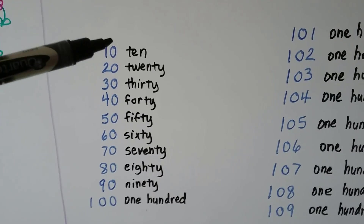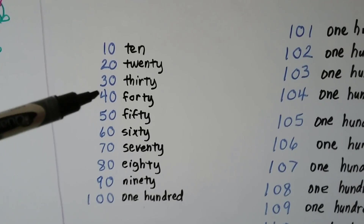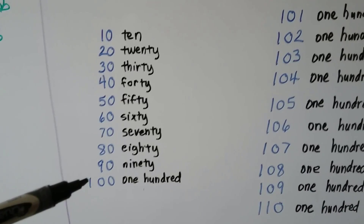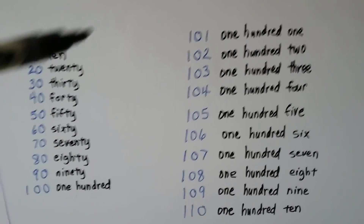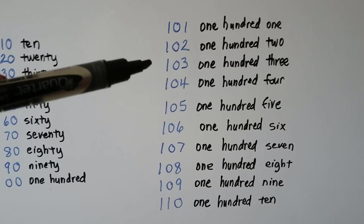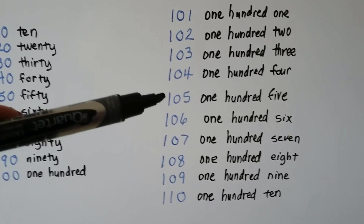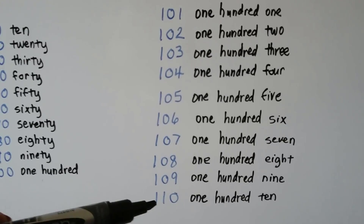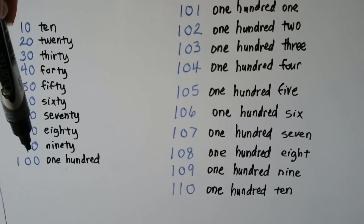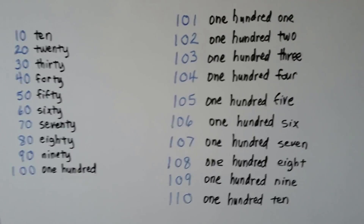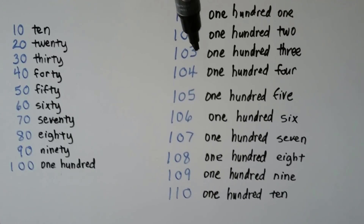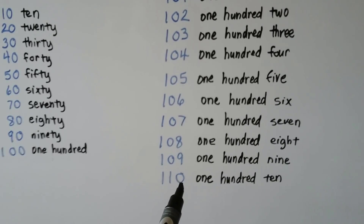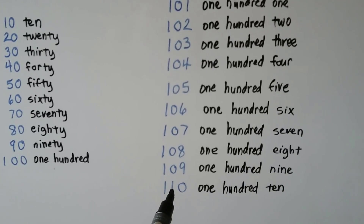We can count by tens: ten, twenty, thirty, forty, fifty, sixty, seventy, eighty, ninety, one hundred. And we can count on from one hundred: one hundred one, one hundred two, one hundred three, one hundred four, one hundred five, one hundred six, one hundred seven, one hundred eight, one hundred nine, one hundred ten. Do you see how from one hundred, where there was a zero in the ones place, the ones place went one, two, three, four, five, six, seven, eight, nine — and after the nine, we put a zero in the ones place, and now we had a ten?